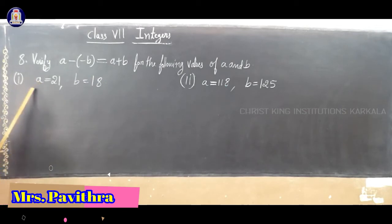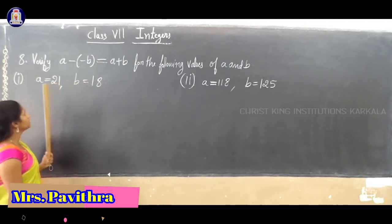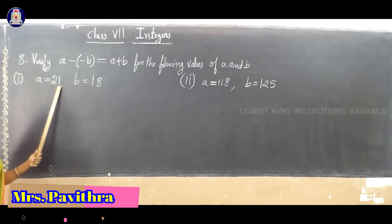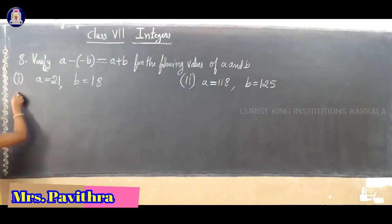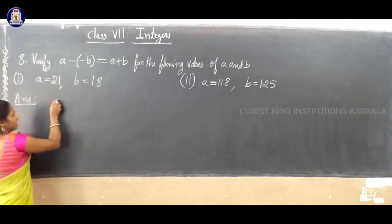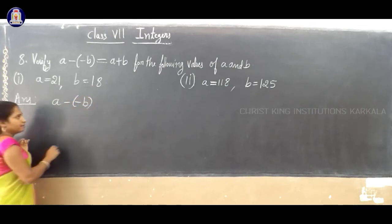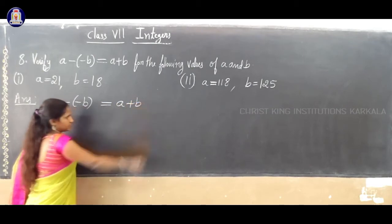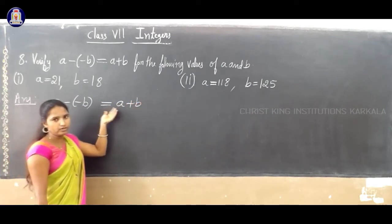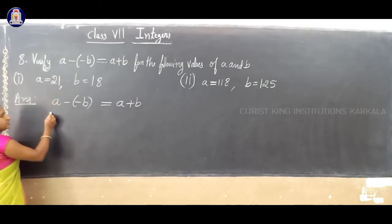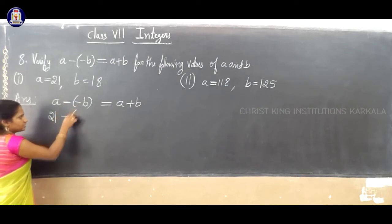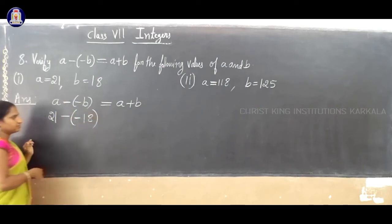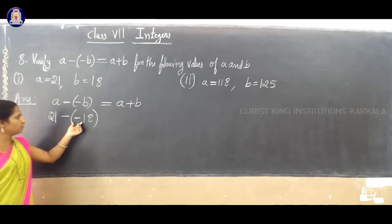The first question: the value of A is 21 and the value of B is 18. So, we have to verify both left-hand side and right-hand side. Substituting: left-hand side is 21 minus of minus 18, and right-hand side is 21 plus 18.